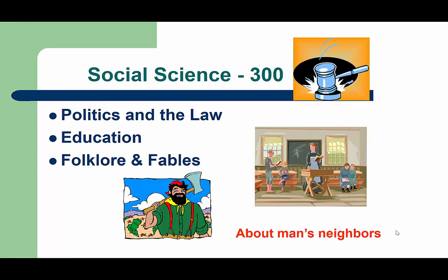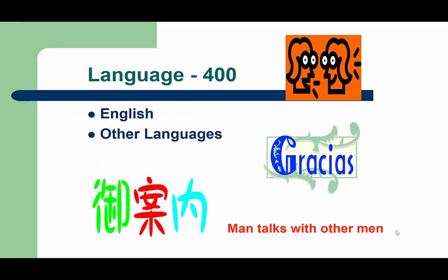At St. Margaret's, the 300s, or the social science section, is one of our largest because we have a huge folklore, fable, and fairy tale section located right here. But there are so many other interesting topics found in the 300s, like different people groups, politics, holidays, social problems, and even transportation. We don't have a lot of books written in other languages, but you will find some pretty interesting books about how wacky English is in the 400s, or the language section.